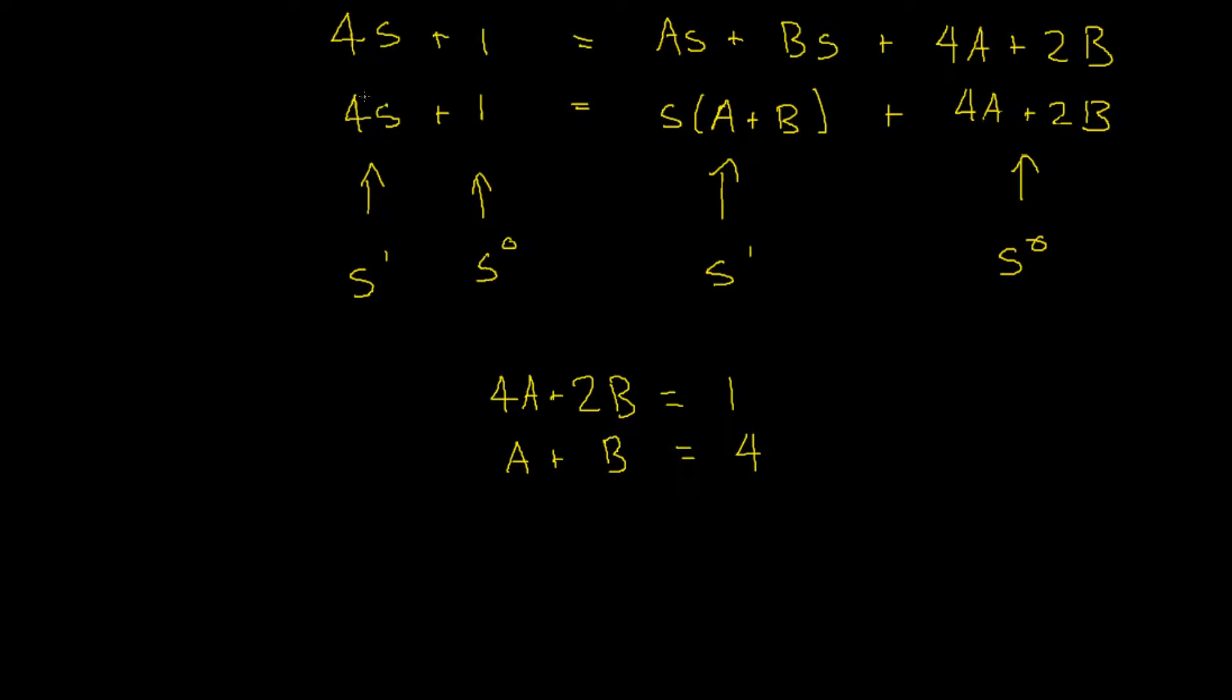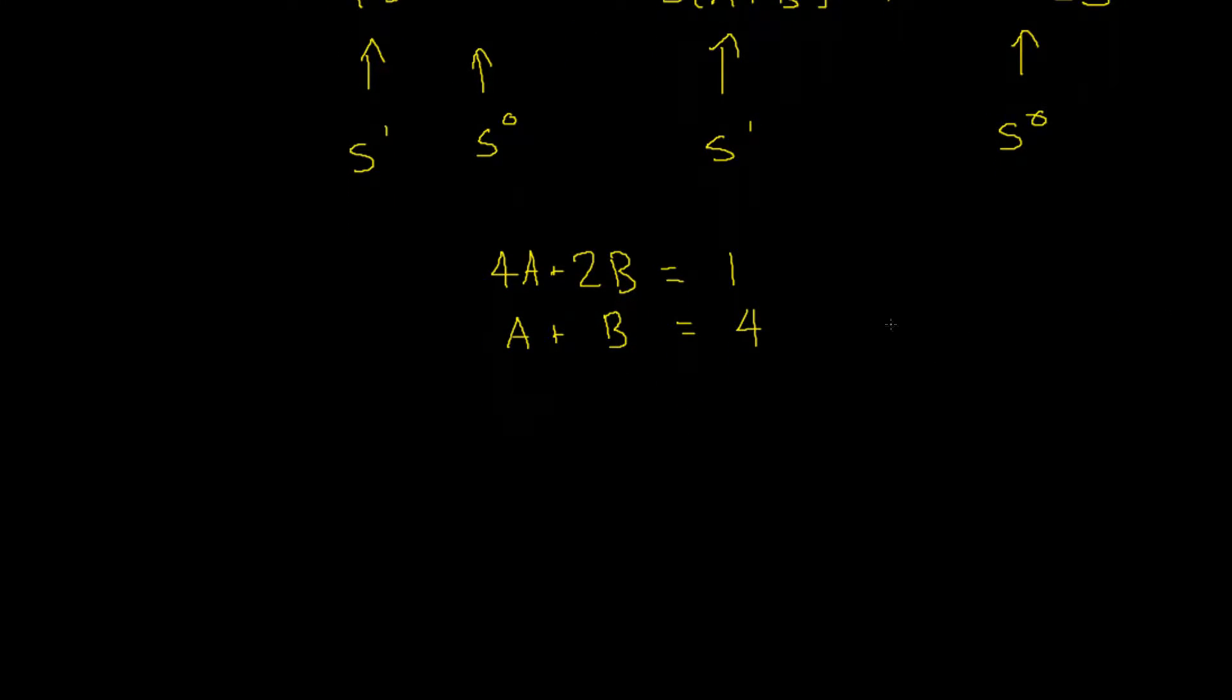If there is a 4 on our s to the power of 1 term on the left-hand side, and A plus B on the right. Then we can use these equations to solve for both A and B. We can do this by multiplying through our second equation by 2, which would give us 4A plus 2B equals 1. And then our second equation would be 2A plus 2B equals 8.